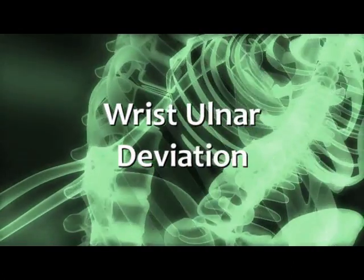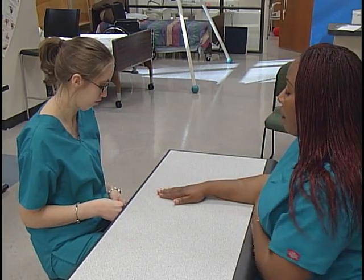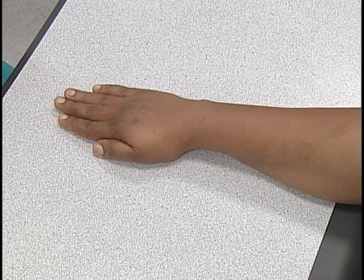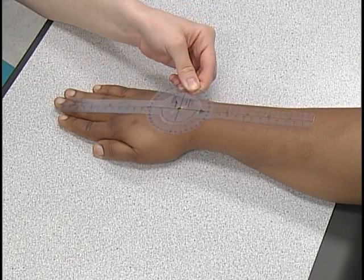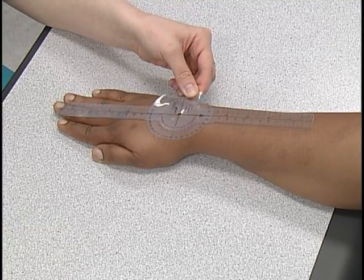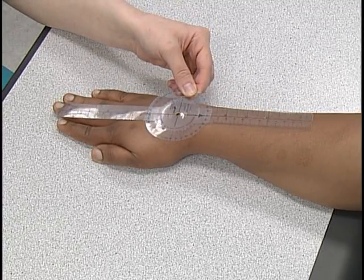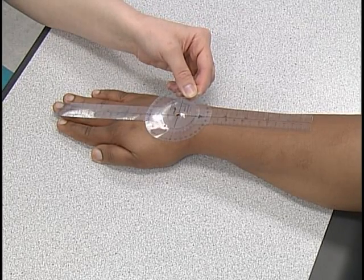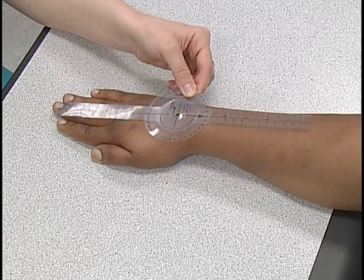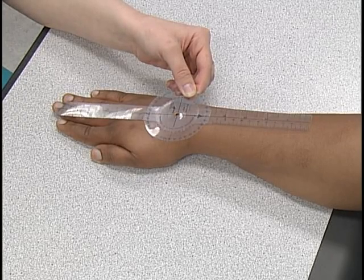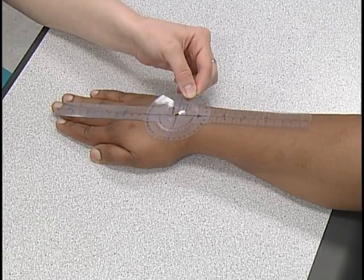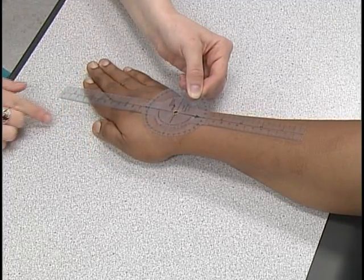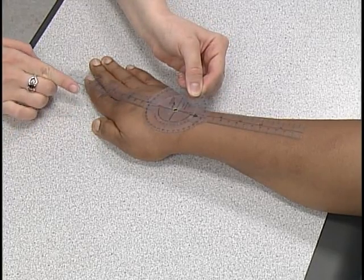For wrist ulnar deviation, the client is seated with the forearm pronated and palm of hand resting flat on the table surface. The goniometer is positioned so that the third finger lines up with the center of the forearm. The axis of the goniometer is on the dorsum of the wrist at the base of the third metacarpal. The stationary bar is positioned in the center of the forearm and the movable bar is parallel to the third metacarpal. The client's hand is laterally extended in a horizontal plane of movement. The measurement begins at zero degrees and ranges to 30 degrees.